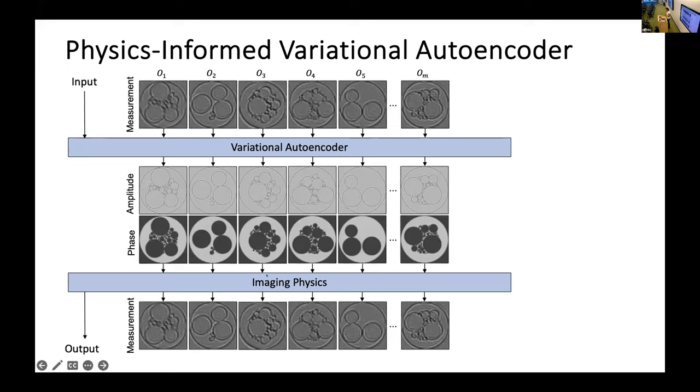And we can regularize the system with incorporating the known imaging physics. So by incorporating that known imaging physics, we can go from high resolution object that we predict back down to predicted low resolution measurement. And if that measurement output is the same as the input, then we are doing well.